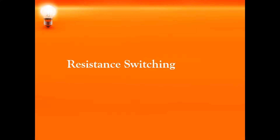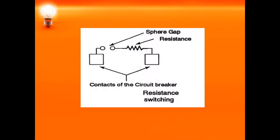Welcome to the session on resistance switching in circuit breakers. Whenever a fault occurs, the contacts of the circuit breaker get separated, and an arc is formed between them. This arc current is very high and has to be quenched using a suitable insulating medium, either a gas or a liquid. When the arc is quenched, a very high voltage appears across the circuit breaker contacts, which is known as the restriking voltage.